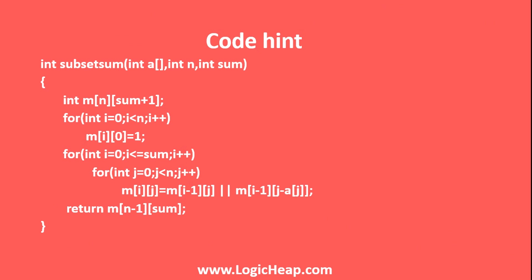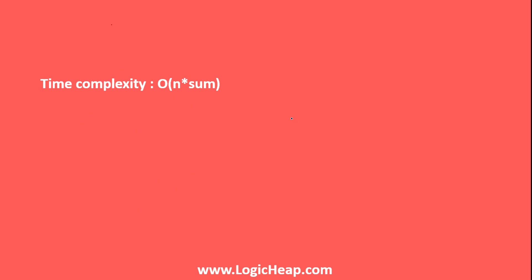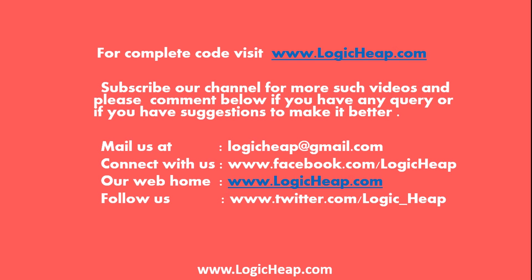The code is now very simple based on what we have done. First, make a matrix. Then initialize the first column with 1. Then apply the simple logic: M[i][j] = M[i-1][j] OR M[i-1][j - A[i]]. Return M[n-1][sum], which is your last cell. The time complexity is O(N × sum) since we create and traverse a matrix of size N × sum.